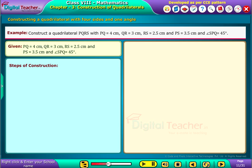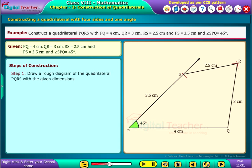The steps to be followed. Step 1, draw a rough diagram of the quadrilateral PQRS with the given dimensions.